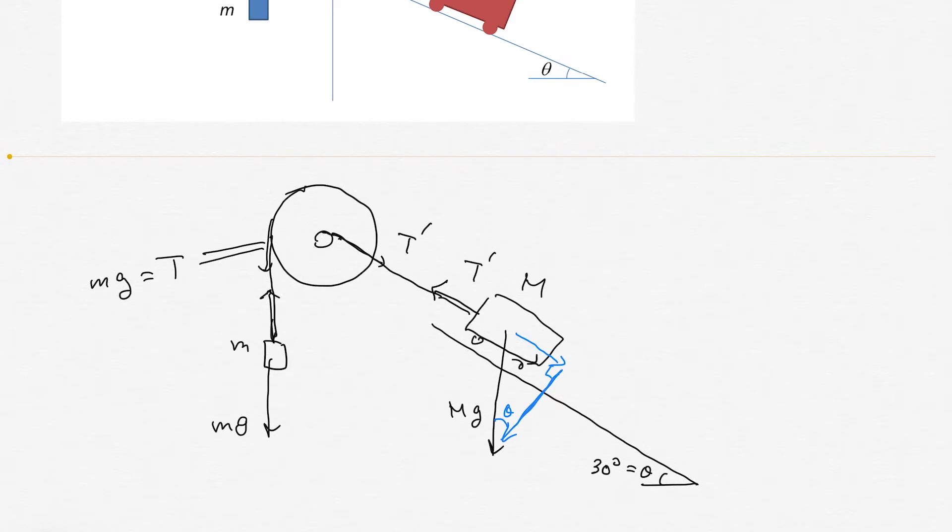This component is balanced with the normal force. This part is expressed as 1/2 Mg because sine theta equals 1/2 when theta is 30 degrees.